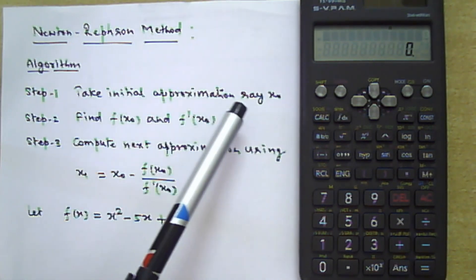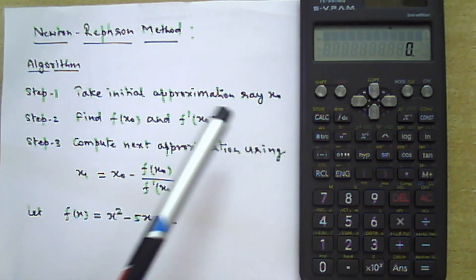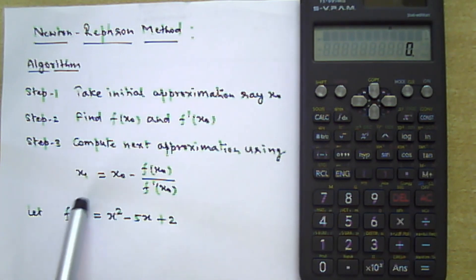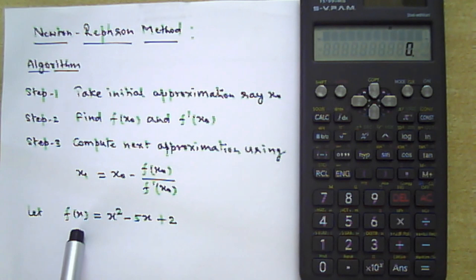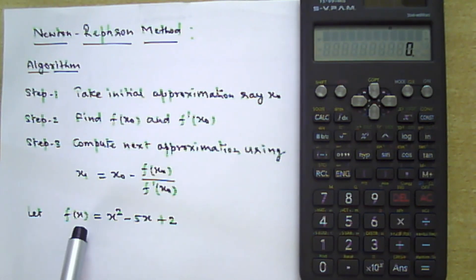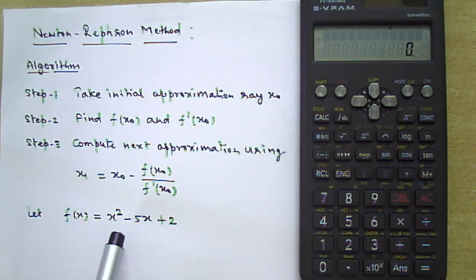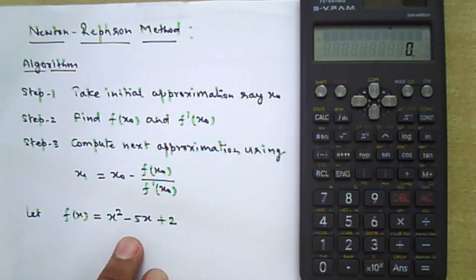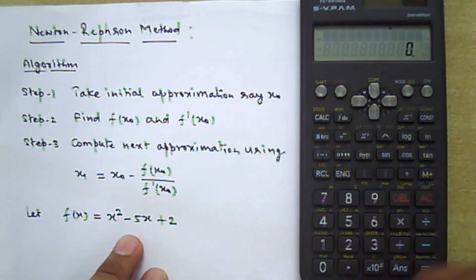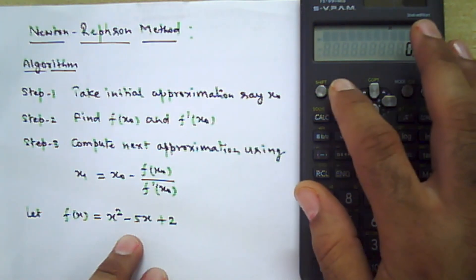Our first step is to take an initial approximation x₀. We would like to find the value of the function at two different values of x and check whether the values are negative or positive. We will first type the function into the calculator, then find its value at those two points.